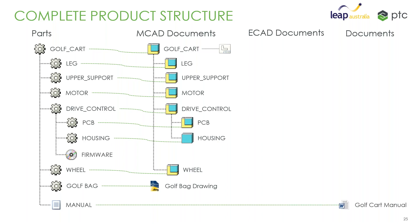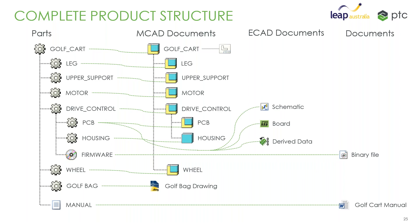We might have our software. We can create a software part as a part, sometimes with its own icons, as I've done with the manual. I can have that document — that binary file — stored in Windchill and managed there, and related as part of the BOM. And then we can have all of our ECAD documents as well: schematic, board, derived data — with the idea being that those can be related back to the PCB part, so it can be related both to the 3D mechanical part as well as the electrical information at the same time.